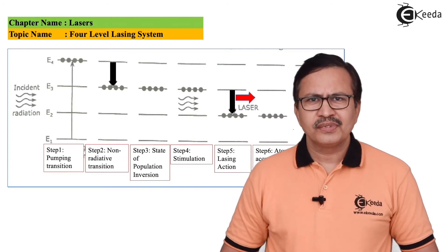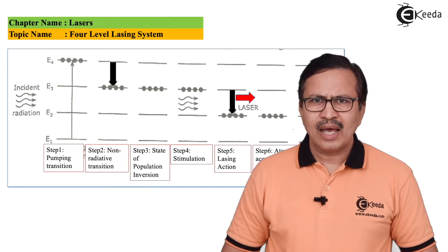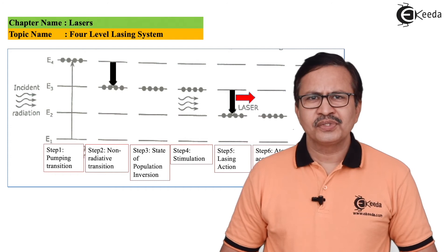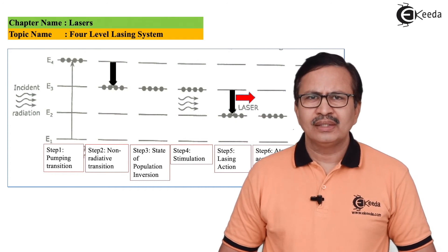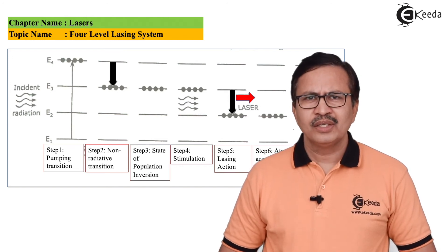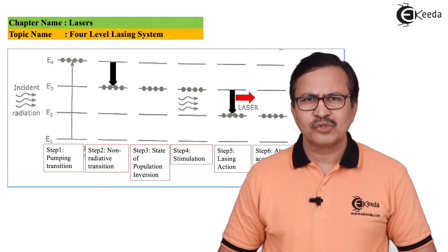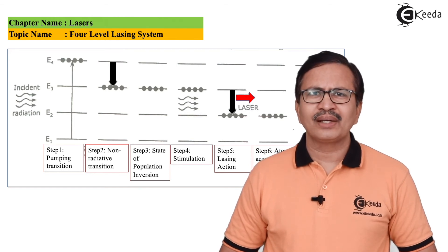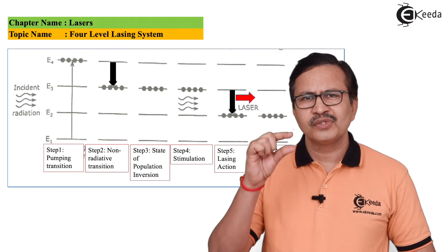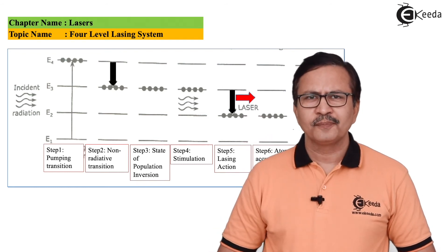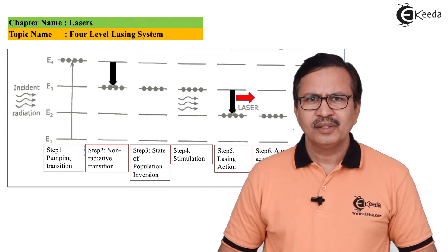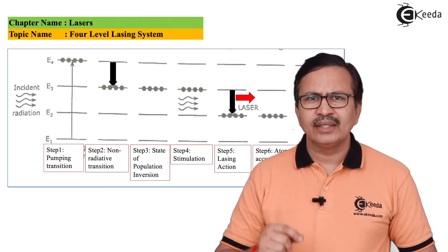The atoms still in the metastable state E3 will take a while to transition, since the lifetime of this state is of the order of 10 raised to minus 3 seconds. However, there will be no lasing action for any transition from E2 to E1, because E2 is very close to the ground state, and hence these atoms will return to the ground state via a non-radiative transition.